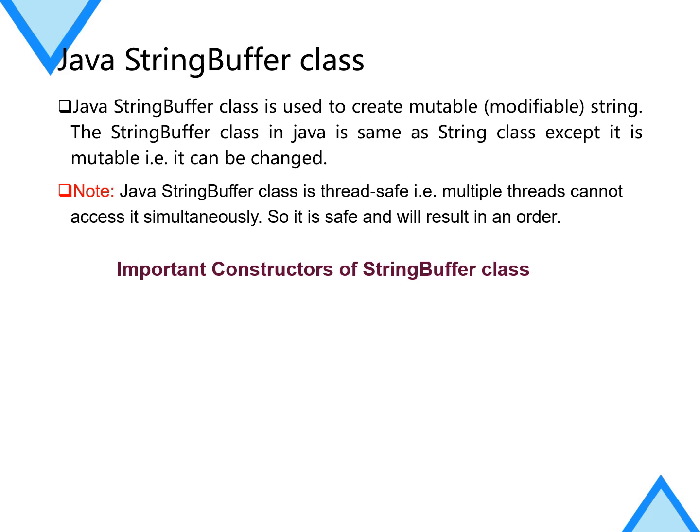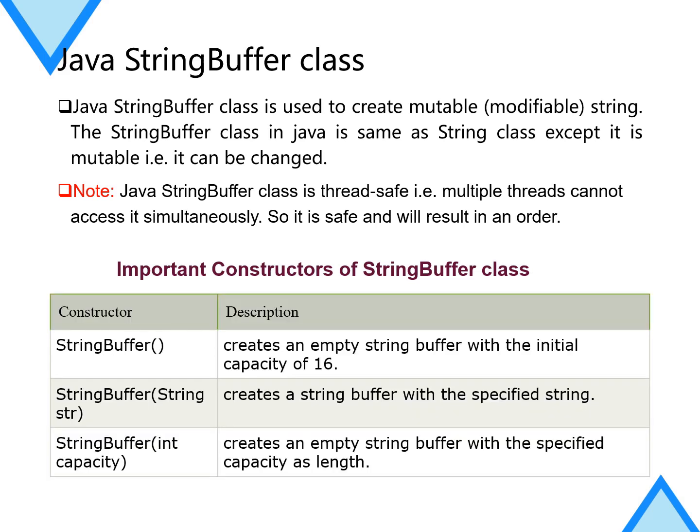Let's discuss some important constructors of the StringBuffer class. The first constructor creates an empty StringBuffer with an initial capacity of 16. The second, StringBuffer(String str), creates a StringBuffer with a specified string. The third, StringBuffer(int capacity), creates an empty StringBuffer with the specified capacity as length, allowing you to modify the capacity inside the parentheses.